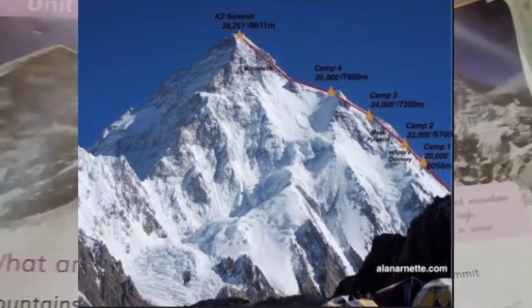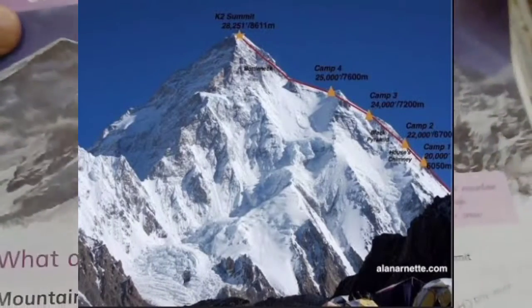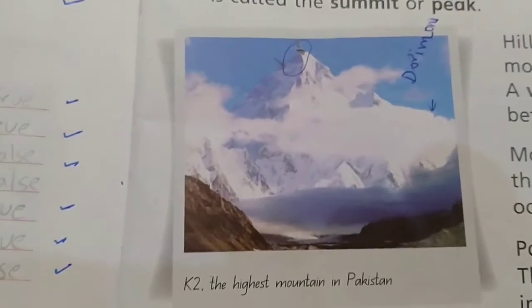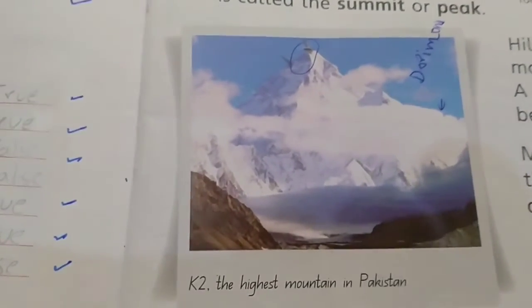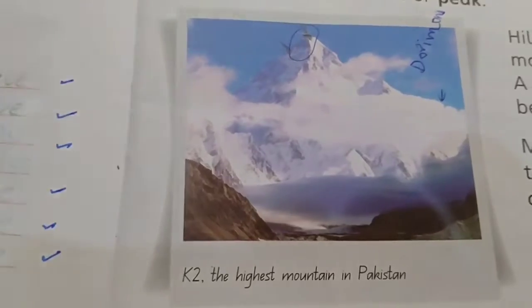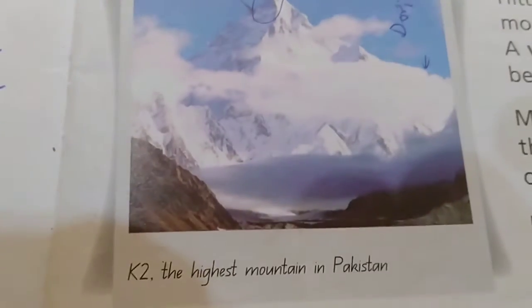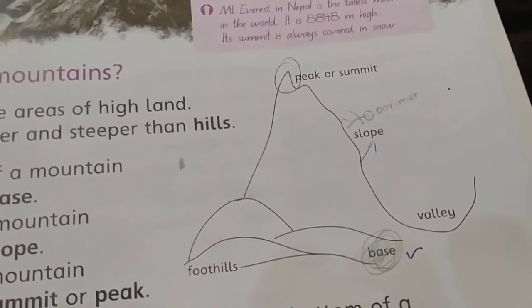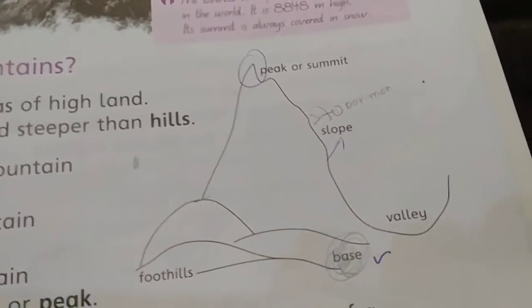Mount Everest is the highest mountain in the world. Which one is the highest mountain in Pakistan? K2. Good. Can you explain this diagram?